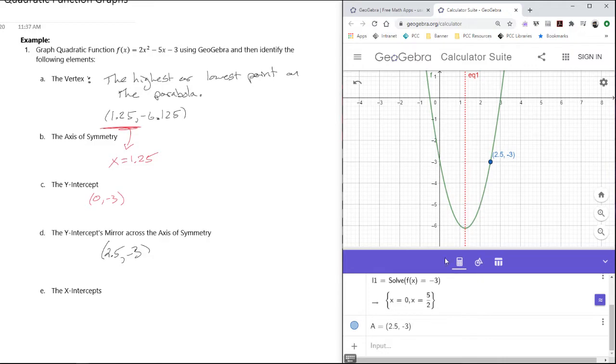We could have done that for any of these points. Let's call capital V for the vertex. That was (1.25, -6.125). And then we wanted the y-intercept, so I'll say capital Y = (0, -3).